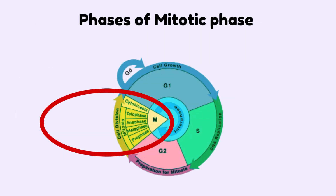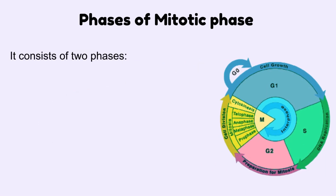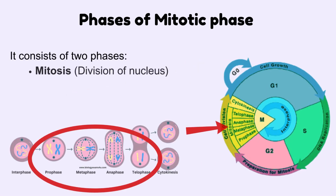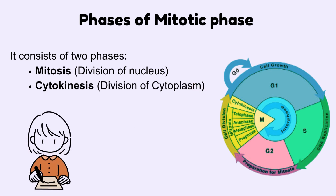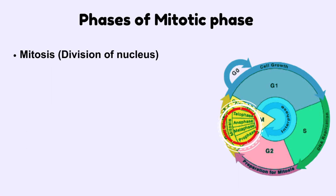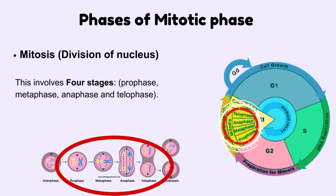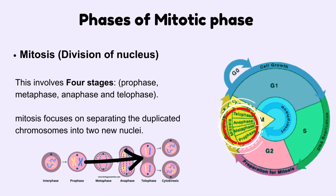The mitotic phase includes two key parts: mitosis, which is the division of the nucleus, and cytokinesis, which is the division of the cytoplasm. Mitosis is made up of four stages: prophase, metaphase, anaphase, and telophase. During this process, the duplicated chromosomes are separated into two new nuclei.